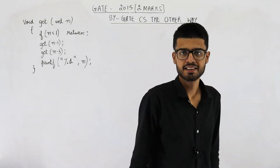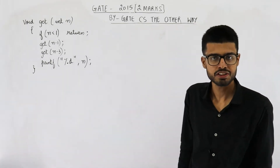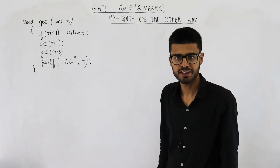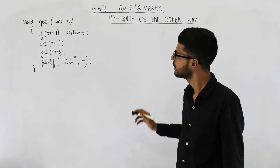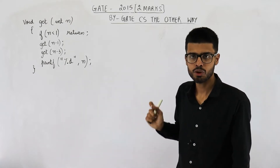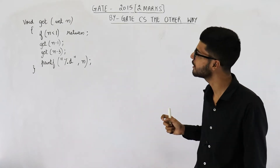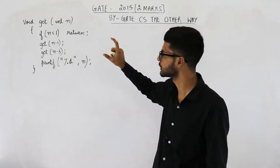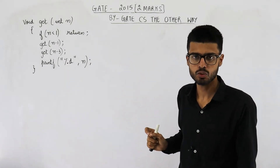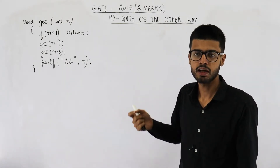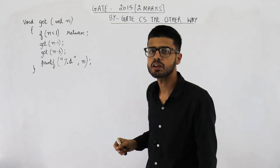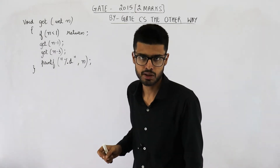Hello dear students, welcome back. This question is from the GATE 2015 exam. They have given you a function called 'get'. The question is: how many times will this function be invoked in total before returning to the main function, if we call this function with 6 as the parameter.